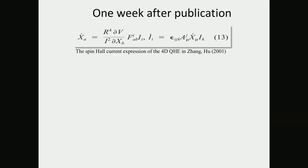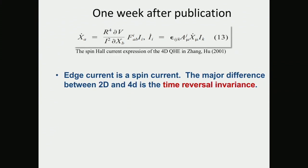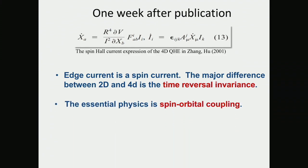One week after the paper was accepted, we discussed future directions. Looking back now, I'm really shocked. The first thing Shucheng told me was that the equation we wrote down is really the spin current. The major difference between the 4D quantum Hall and the 2D quantum Hall is that the 4D quantum Hall is time-reversal invariant, whereas the 2D quantum Hall has a magnetic field and is not time-reversal invariant.